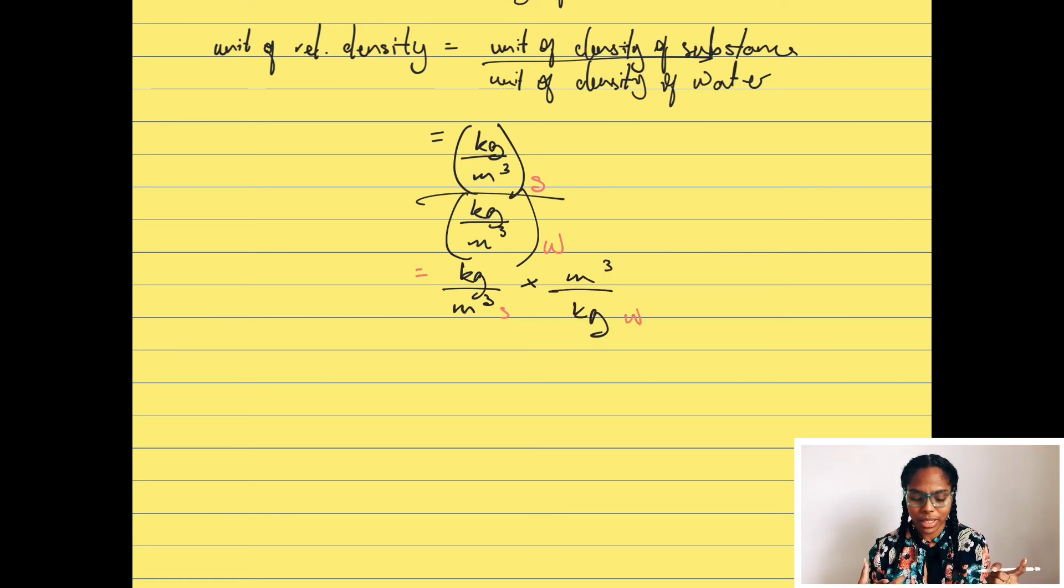Are we seeing anything that we can cancel here? Yes, we definitely see that we can cancel kilogram here and kilogram here, and we can also cancel meters cubed here and meters cubed here. So then we end up with no unit. How is that even possible? Now some things don't have a unit. Relative density is one of them.